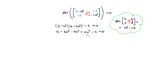Rearranging, we put 2 omega to the power of 4 at the front, then minus 6 omega squared minus 4 omega squared gives minus 10 omega squared, and 12 minus 4 gives 8, all equal to zero. Dividing both sides by 2, we get omega to the power of 4 minus 5 omega squared plus 4 equals zero.